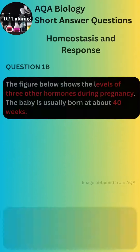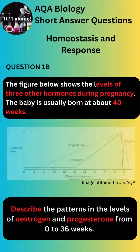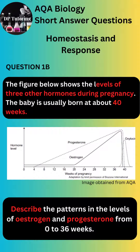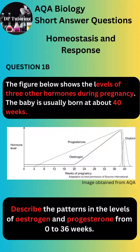For Part B, you are given a graph with three hormones during pregnancy. The baby is usually born at about 40 weeks. Describe the patterns in the levels of estrogen and progesterone from 0 to 36 weeks. You need to pay attention to the flat lines and the slopes on the graph for each hormone.